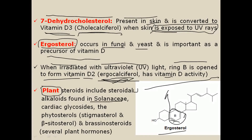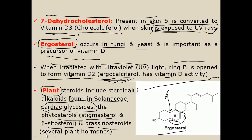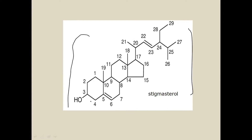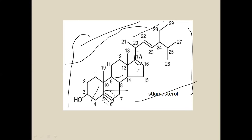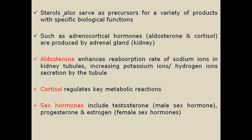Plant steroids include steroidal alkaloids found in the Solanaceae family, cardiac glycosides found in different species of Digitalis, and phytosterols such as stigmasterol and beta-sitosterol, as well as brassinosteroids which contain cell and plant hormones. In the structure of stigmasterol, double bonds are shown between carbons five and six; carbon 17 contains the side chain, carbon 13 contains a methyl group, and carbon 10 contains a methyl group.